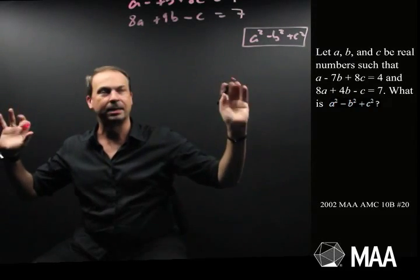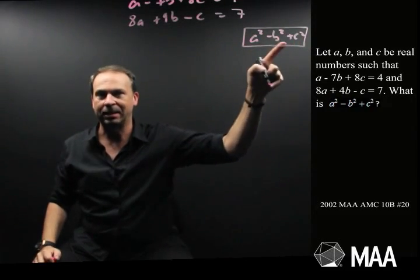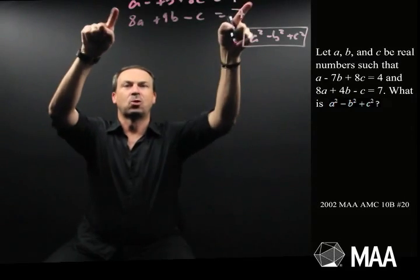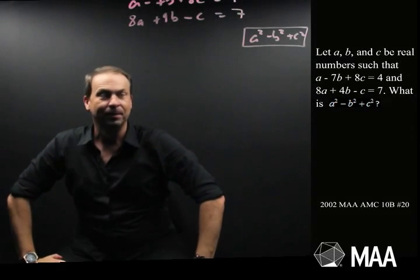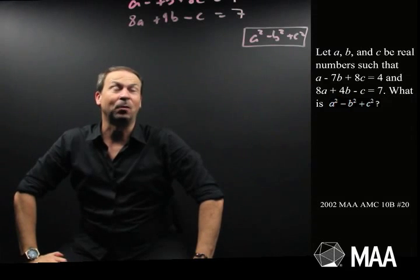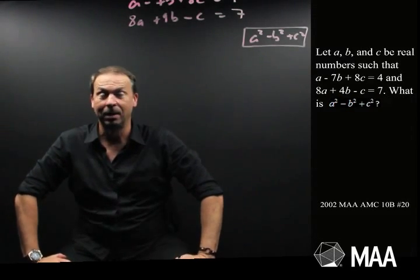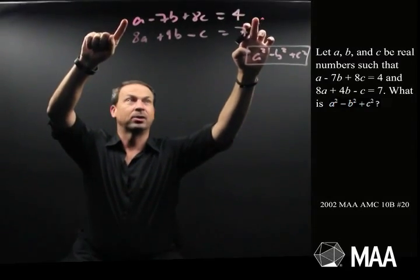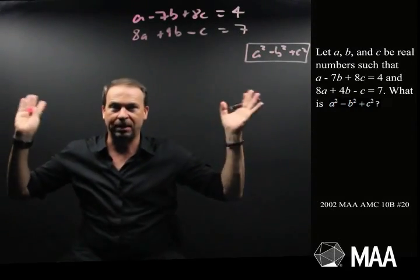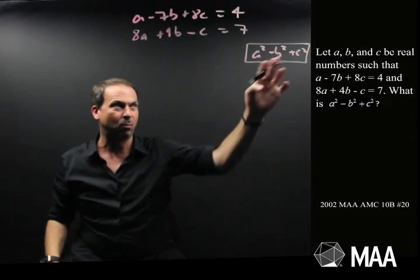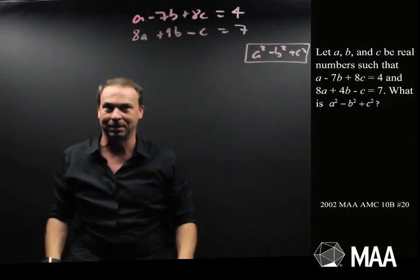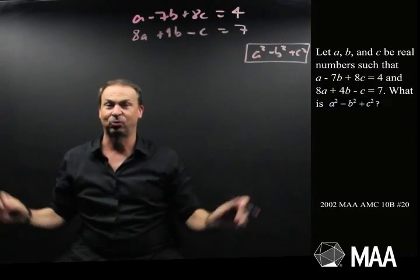All right, the first thing I notice is that I want something about things with squares in it and I see no squares in my original equations. So that's just telling me, I don't know if it's going to be helpful or not, but I want to square stuff. I want to get squares in this somehow. So let me just square the first equation and I'll square the second equation and hopefully something clever will come out that I'll see what a squared minus b squared plus c squared is. Don't know if it's going to work or just try it.